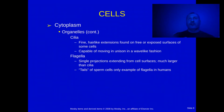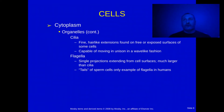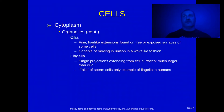The last two organelles: cilia are hair-like extensions that allow the cell to move. Flagella are only found on sperm cells, allowing them to propel or swim. Anytime you see a flagella, you know it's a sperm cell. Cilia can be found on quite a few different types of cells.